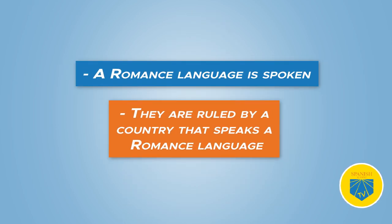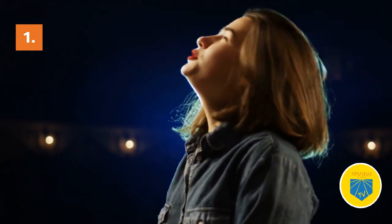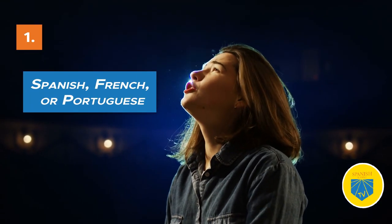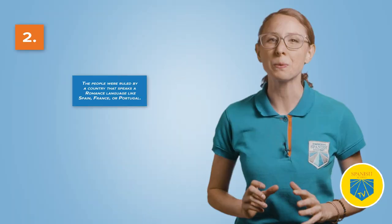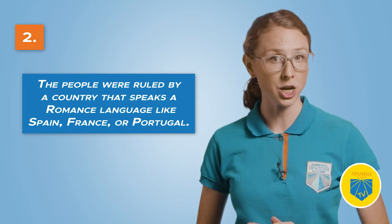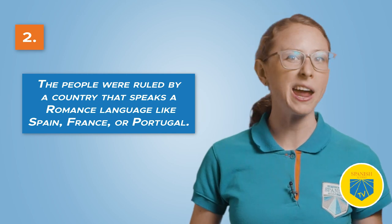But wait — what about Latin America? Where is this on the map? Lots of people think Latin America includes every country south of the United States. Well, it's slightly more complicated than that. Latin America is confined to the geographical region of the Americas. It includes 26 countries where a Romance language is spoken — Spanish, French, or Portuguese — or where the people were ruled by a country that speaks a Romance language like Spain, France, or Portugal. In a few cases, they still are.